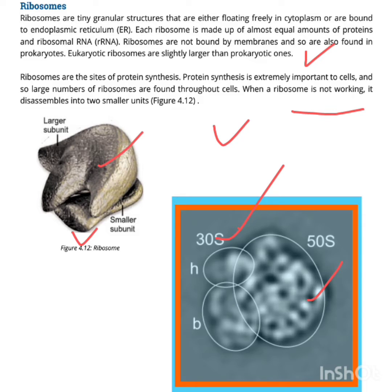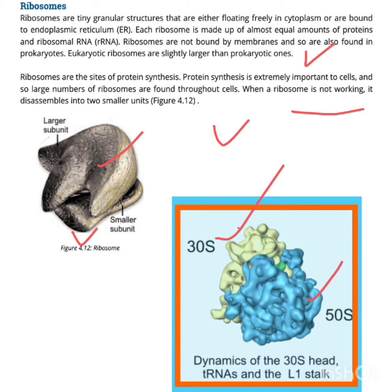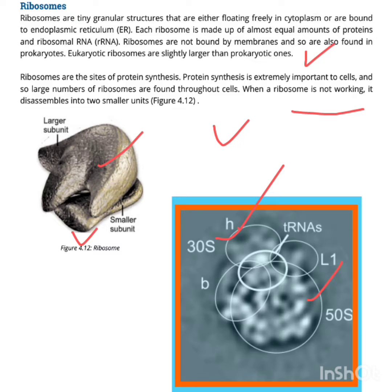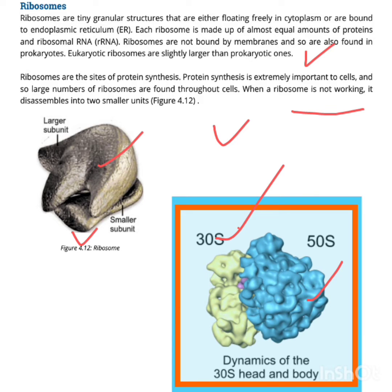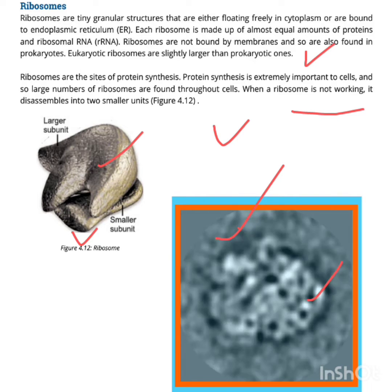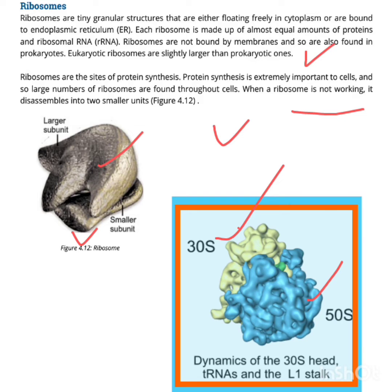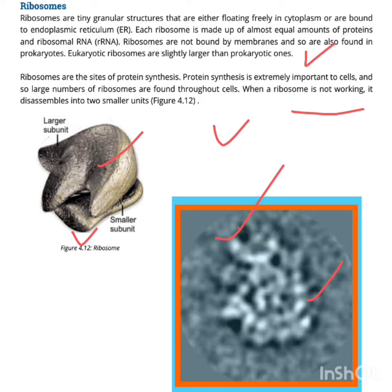Can you live without ribosomes? Every chemical process and damage repair in cells requires protein. Proteins are involved in repairing the body. Without ribosomes, the cells in the body will not be able to synthesize proteins and function properly, so without ribosomes life will not be possible in living organisms.